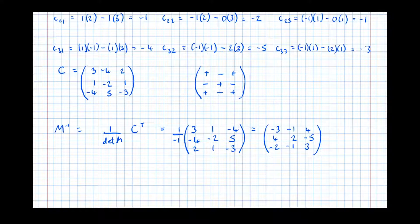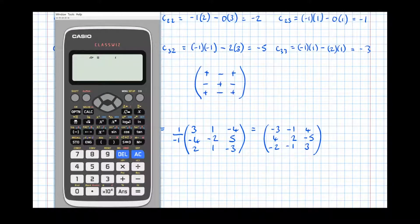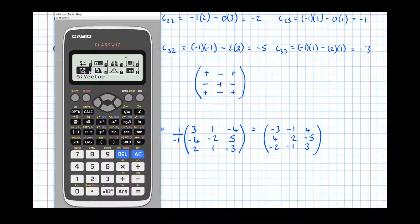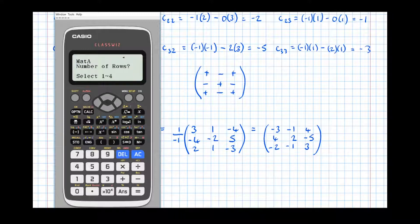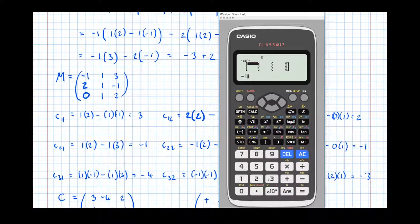We can actually check this on the calculator now. So let's have a check. So the original matrix menu. There it is there. Option 4, matrix. Define matrix A. It's a 3 by 3, so 3 rows, 3 columns. Let's go back up to the original matrix. There it is there. So -1, 1, 3. So I normally say matrices and columns, but unfortunately the calculator accepts it in rows. So what I'm doing here, I'm inputting the matrix in rows, contrary to how I normally write it. 2, 1, -1, and 0, 1, 2.